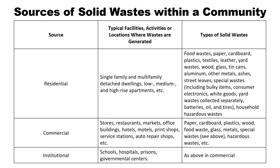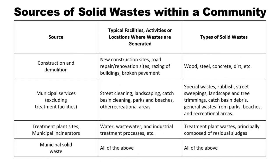For the institutional source, waste comes from schools, hospitals, prisons, and governmental centers. The types of solid waste are the same as from the commercial source — food waste, paper, cardboard, and so on. Another source of solid waste is construction and demolition, where waste comes from new construction sites, road repair, renovation sites, razing of buildings, and broken pavement.